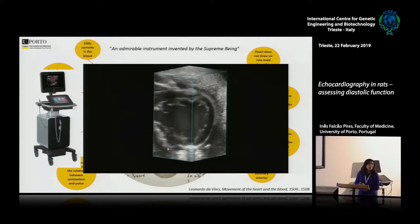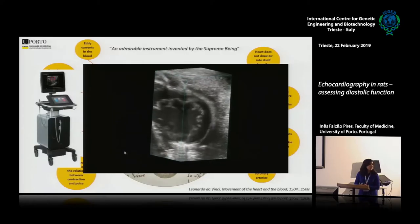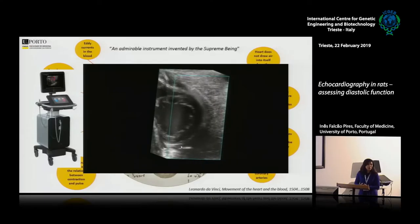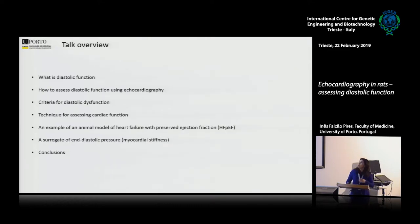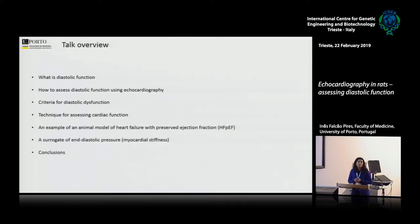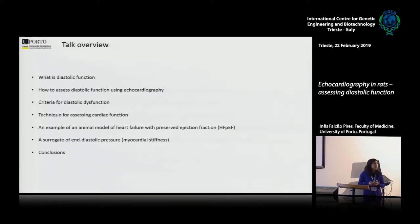Now, unfortunately, I have to disclose that I don't have a Vivo in my lab, which is actually a pity, and I'm not a cardiologist. So I will speak mostly about assessing diastolic function in rats. One of the major focuses of our lab is heart failure with preserved ejection fraction. I will briefly explain what diastolic function is, how we can assess it using echocardiography, the criteria for diastolic dysfunction and HFpEF — which so far is only described and defined for humans, not for rats, and that's why we need standards.